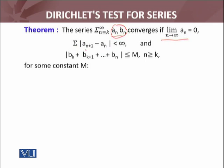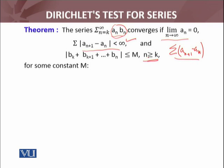Furthermore, the summation of the absolute value of aₙ₊₁ minus aₙ is less than infinity — it means this series is absolutely convergent. These are the restrictions on aₙ: the term when n approaches infinity should be 0, and this series should be absolutely convergent. Now the restriction about bₙ: if bₙ is such that bk + bk+1 + ... + bₙ is less than or equal to M for some constant M, whenever n is greater than or equal to k.